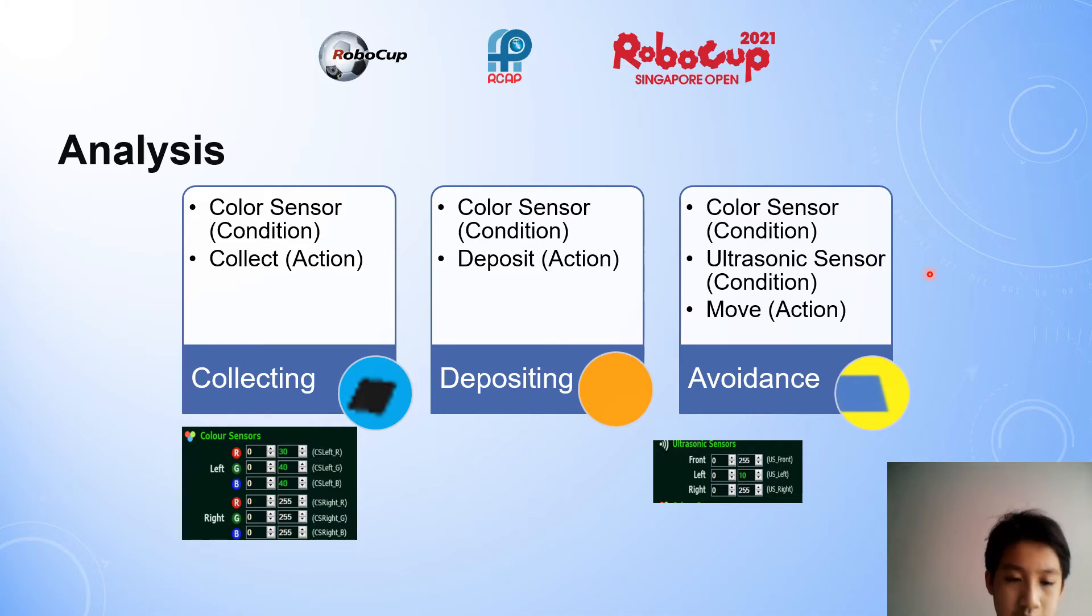So after analyzing the game, we found that there are three major sections: collecting, depositing and avoidance. Each of those has a condition and action. Everything else, which I will discuss later, are bells and whistles to improve the performance of the robot. So like for example, the condition for collecting is the color sensor and the collection is the action. Or like for avoidance, it's either the color sensor or the ultrasonic sensor then it will move away which is the action.